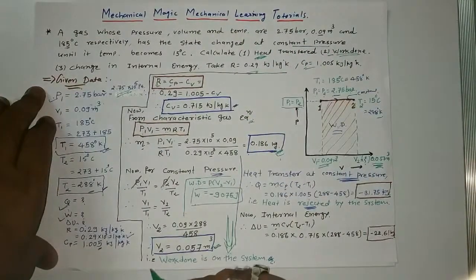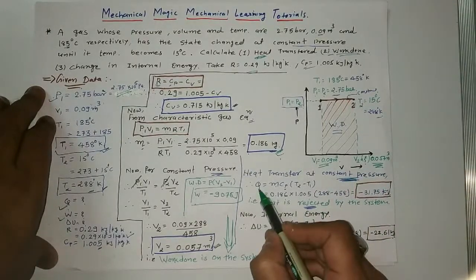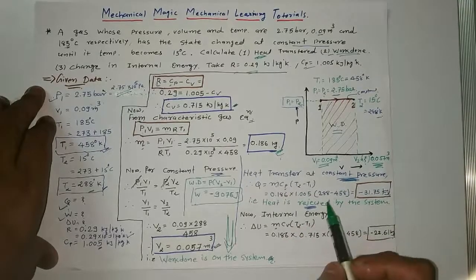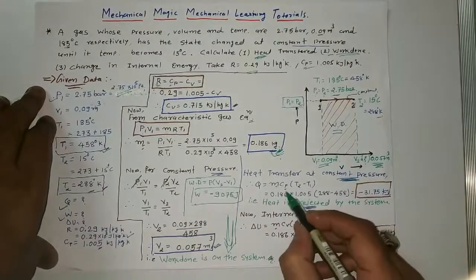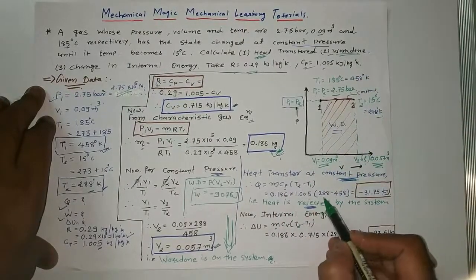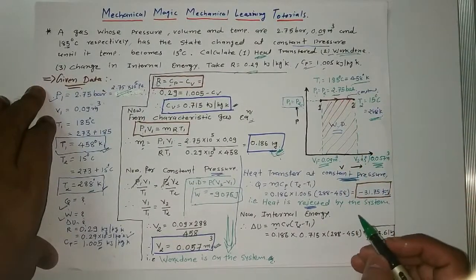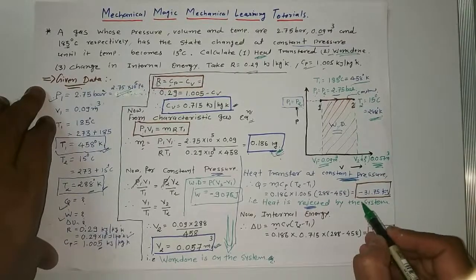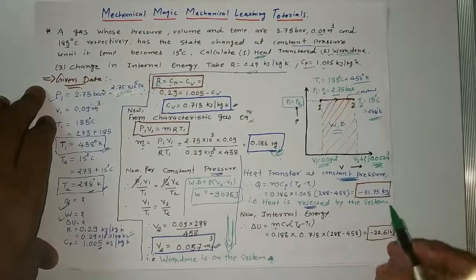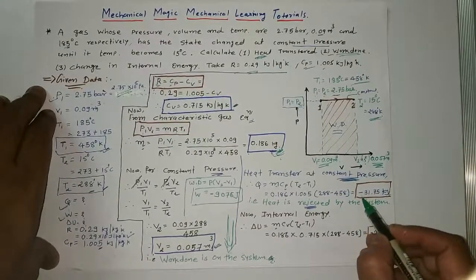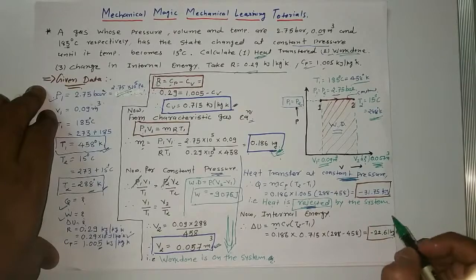For heat transfer at constant pressure: Q equals m Cp delta T. Substituting the values of mass m, Cp, and the temperatures T1 and T2, the answer is minus 31.75 kilojoules. The negative value means heat is rejected by the system.